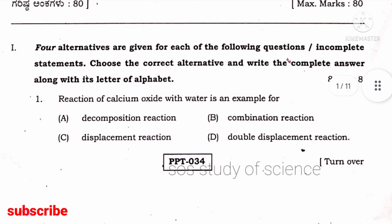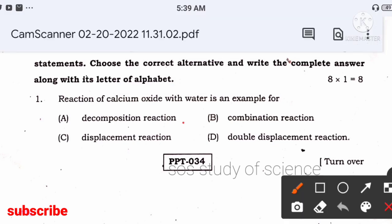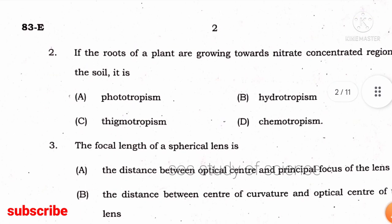Firstly, when you look at the multiple choice questions, they have asked: 'Reaction of calcium oxide with water is an example for...' I told you they will ask one type-of-reaction-based question. The right answer is combination reaction. Calcium oxide combined with water forms calcium hydroxide, so the right answer is combination reaction.